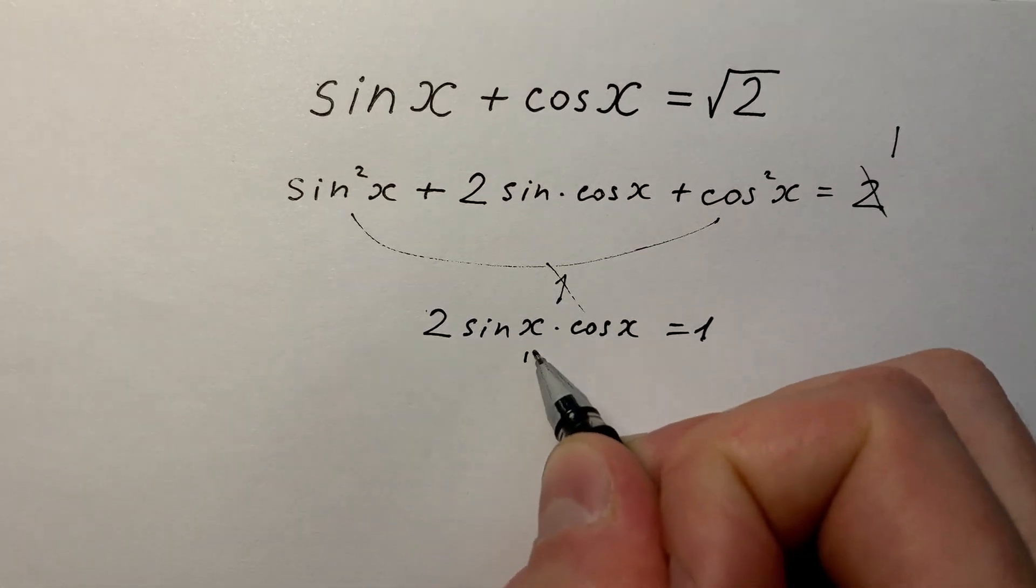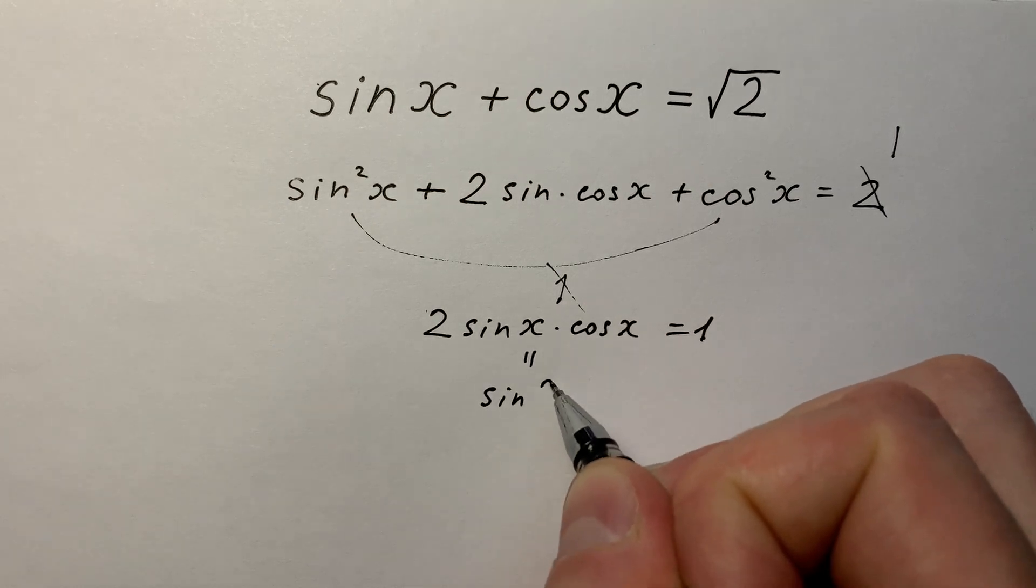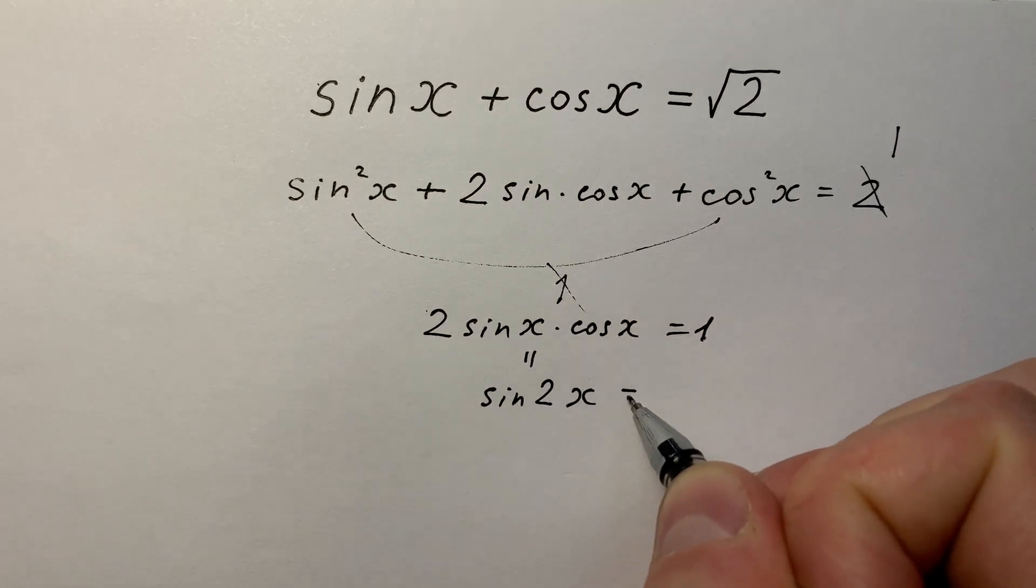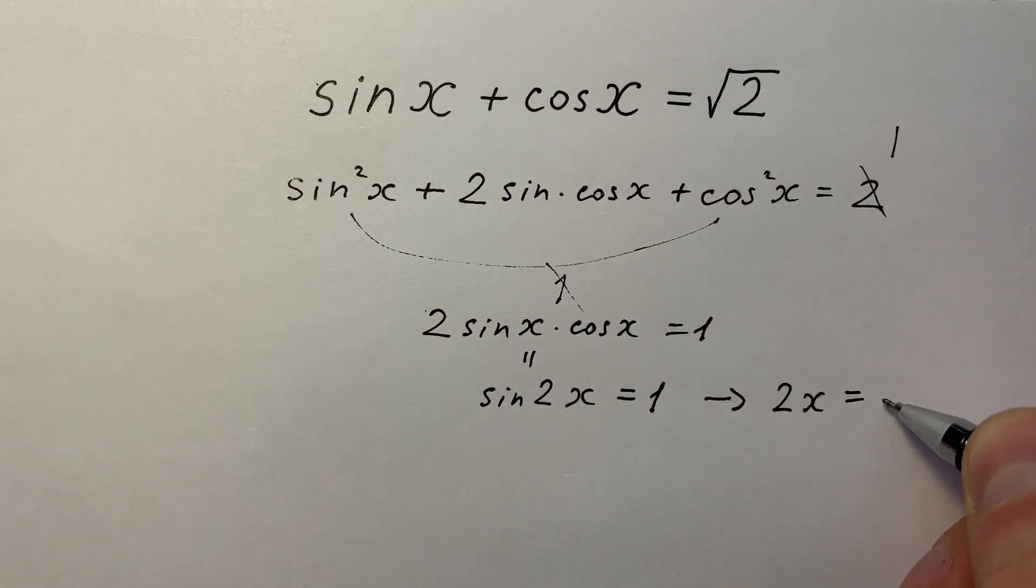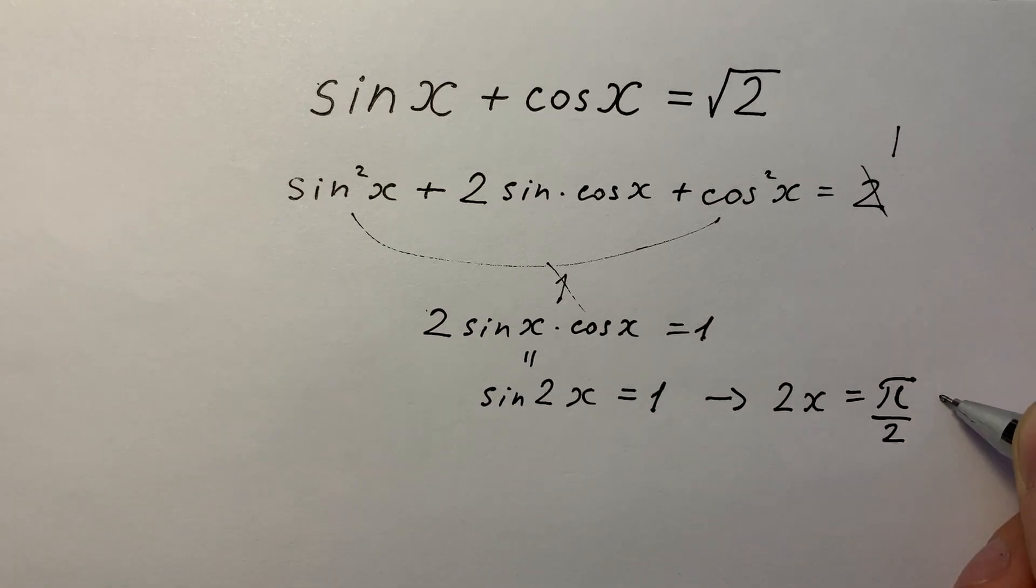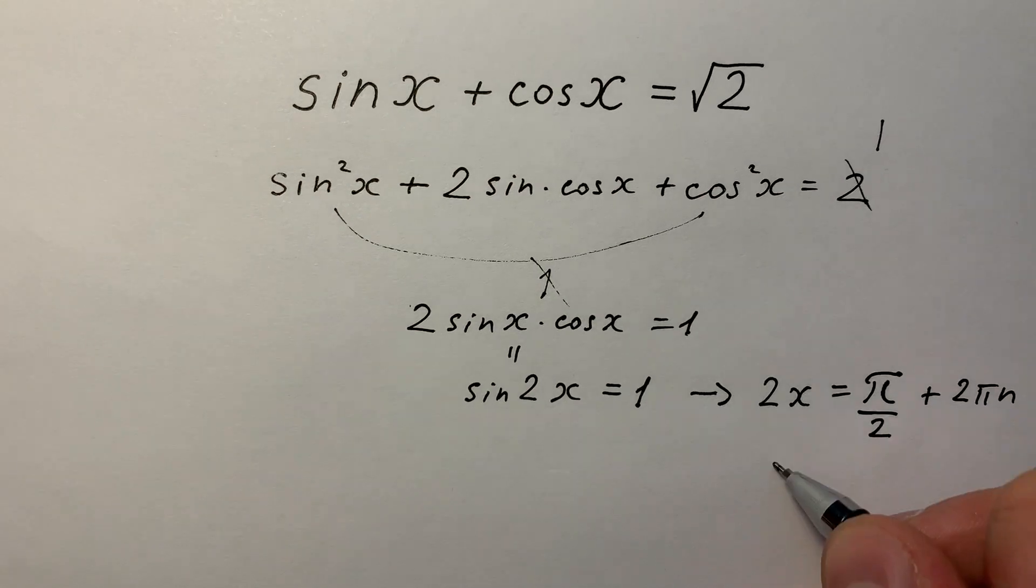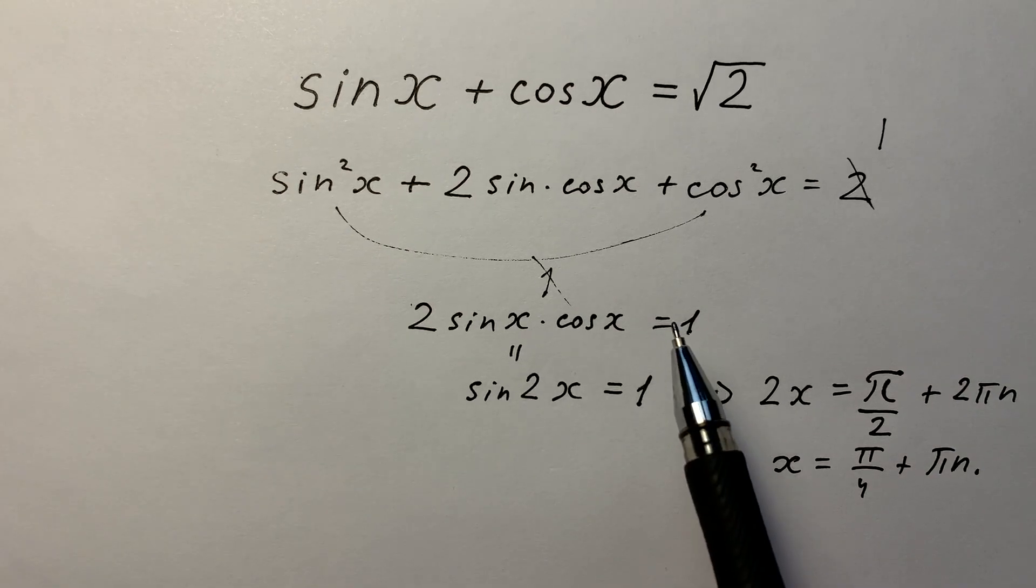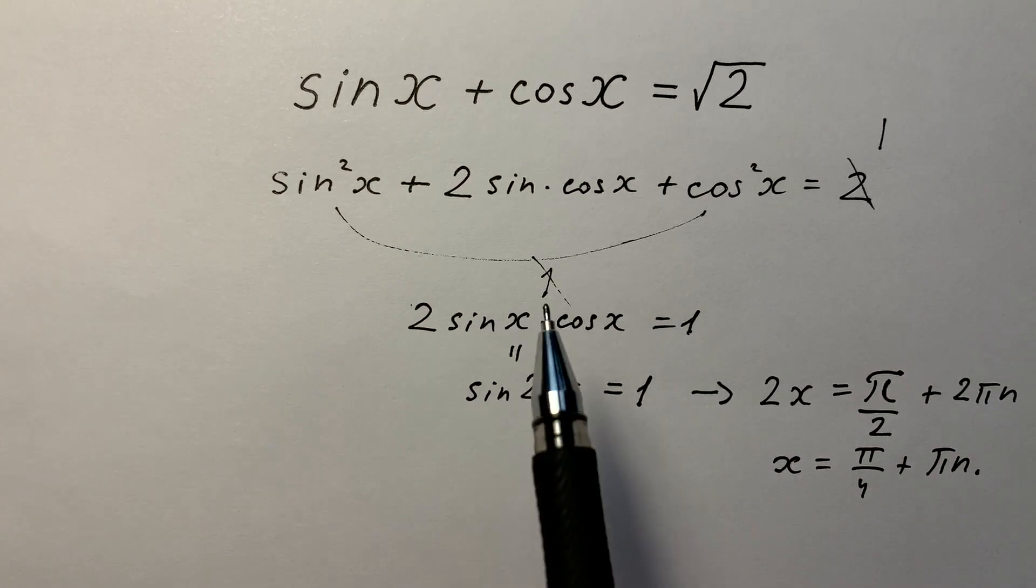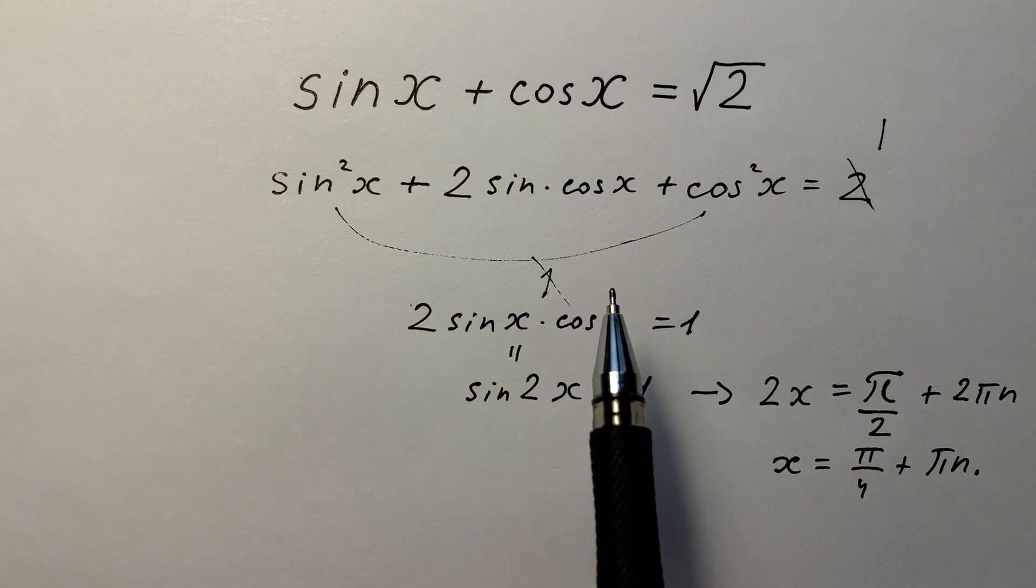The left side equals sin(2x), and it equals 1. That's why 2x equals π/2 + 2πn, and x equals π/4 + πn. It's not a really bad way to solve, but it's not a second, not nearly a second. My classmate solved this in less than a second, but how?